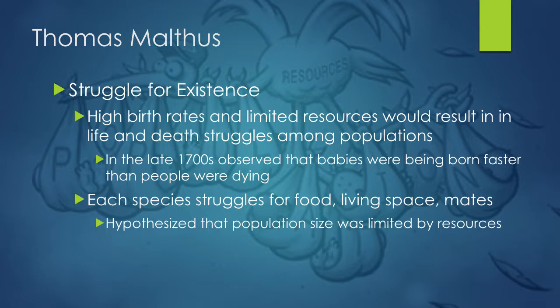Next up we have Thomas Malthus, whose ideas were about the struggle for existence. In the 1700s, the Industrial Revolution drove higher birth rates and limited resources, resulting in more competition. He equated competition in the wild to competition among humans for resources — this is where Darwin got the idea for survival of the fittest. Malthus said every species struggles for food, living space, and mates, and that population size would be limited by resources, causing organisms to die off.